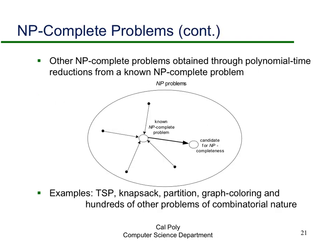Once you have an NP-complete problem, all other problems in NP can be reduced to it — so a solver for it solves everything in NP. Now, suppose you have another problem and want to show it's NP-complete. You reduce the known NP-complete problem to this new problem. That means a solver for the new problem gives you a solver for the NP-complete problem, and thus a solver for any problem in NP.